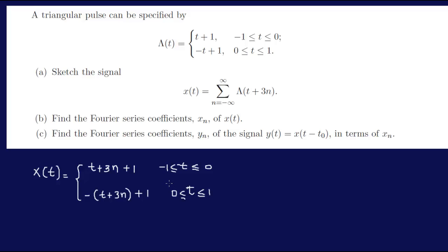This is basically t plus 1 plus 3n if you rewrite it. You can see there's a shift of minus 3. So if we were to graph this, we can just shift it to the left because it's a plus here.